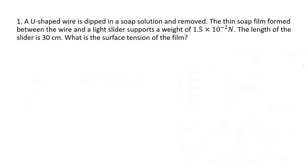Let us go on to our first question. A U-shaped wire is dipped in a soap solution and removed. A thin soap film formed between the wire and a light slider supports a weight of 1.5 × 10⁻² Newton. This includes the weight of the slider also. The length of the slider is 30 cm. What is the surface tension of the film?